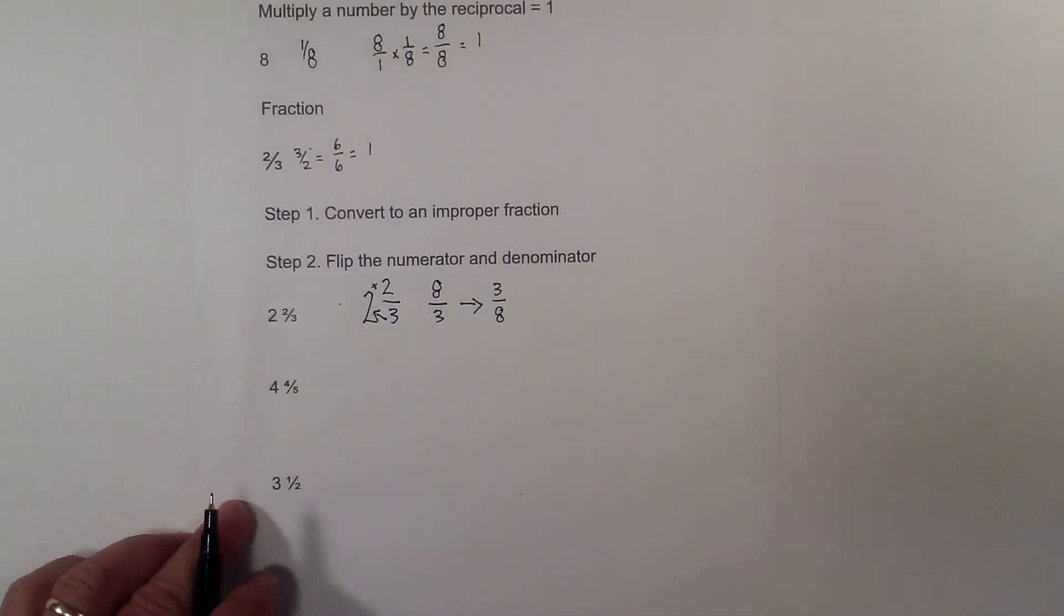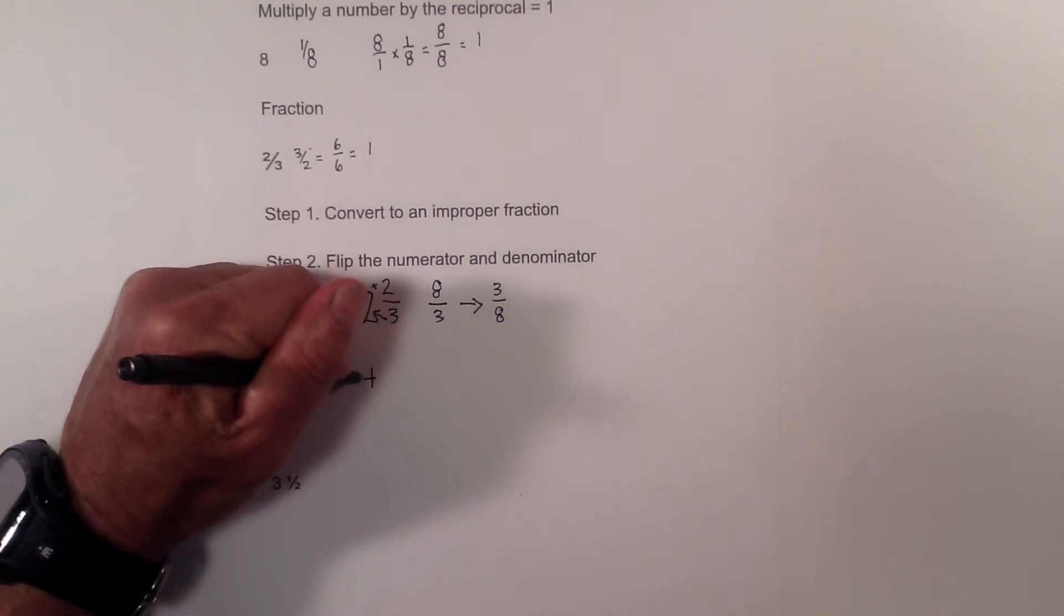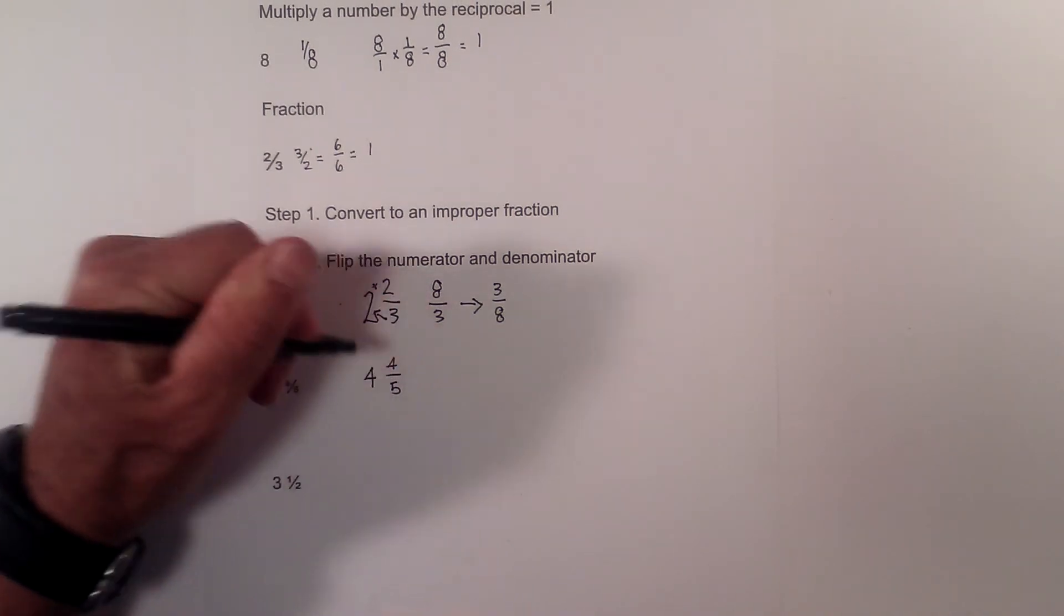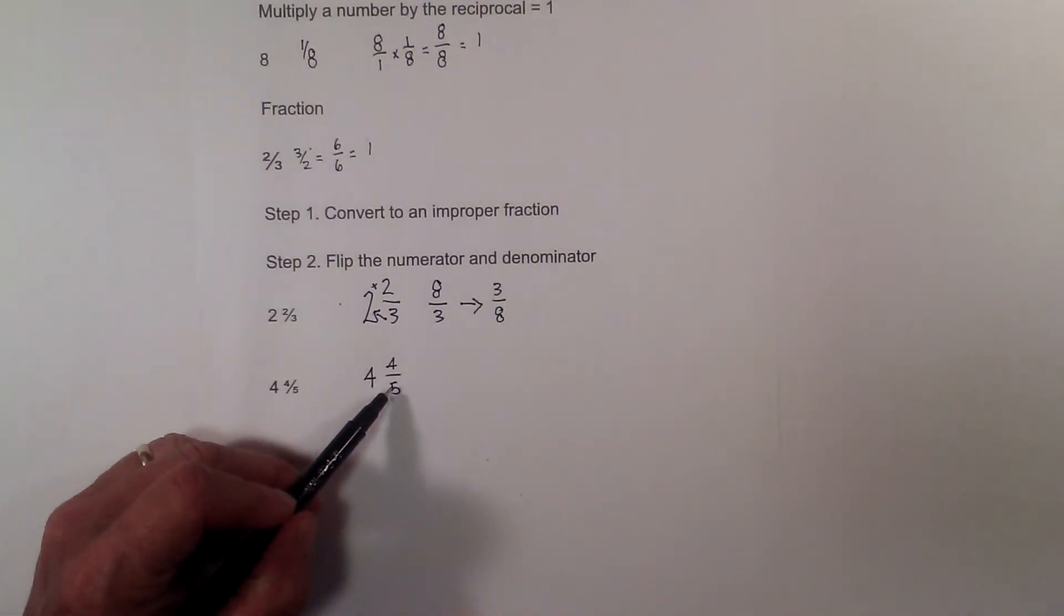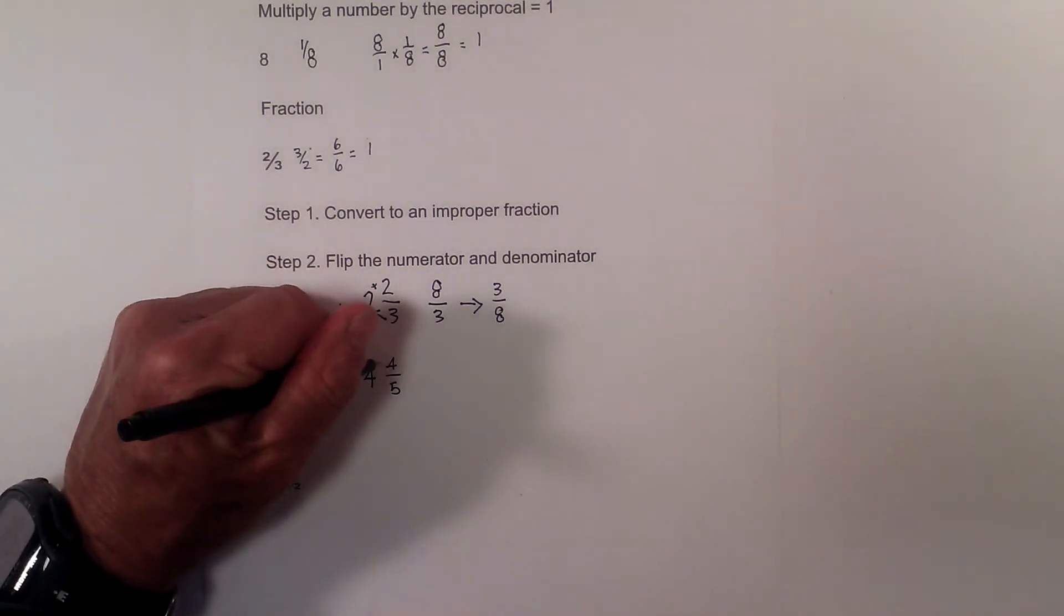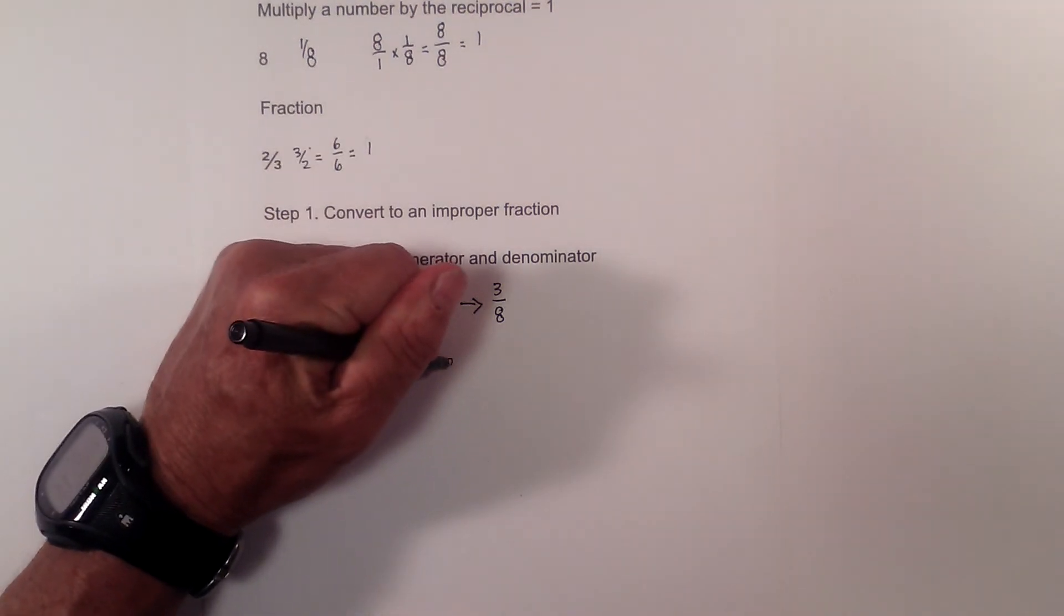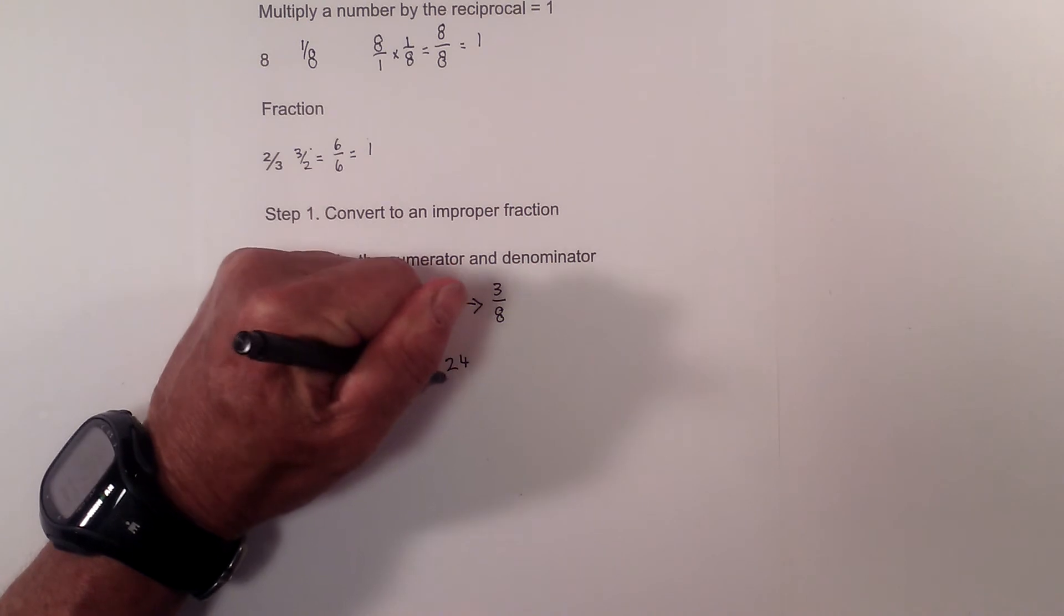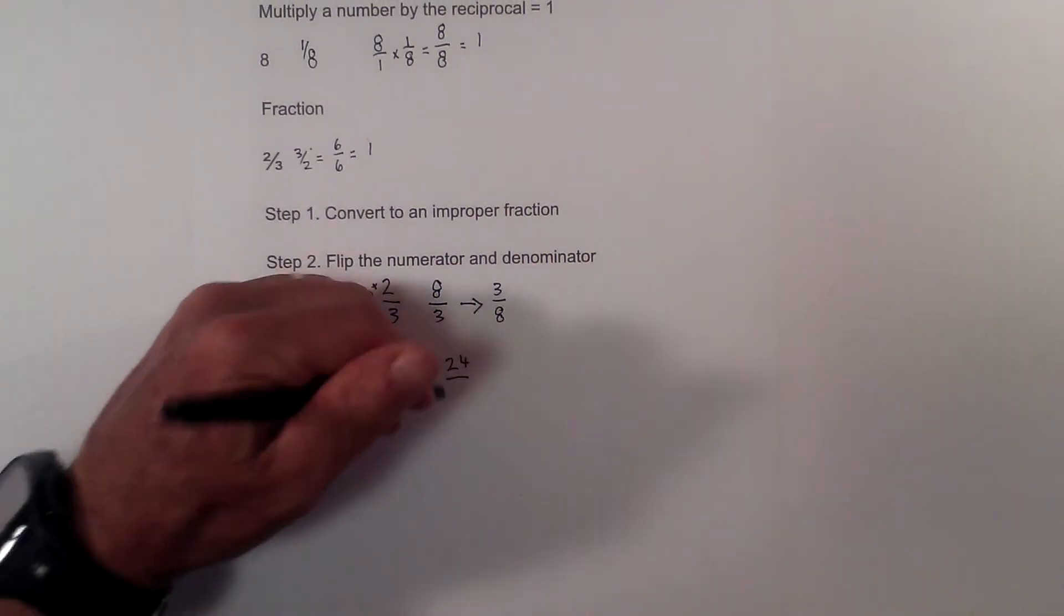Now let's work another one: 4 and 4 fifths. Create an improper fraction. 5 times 4 is 20, plus 4 is 24 over 5.